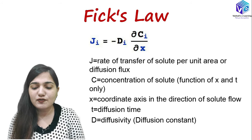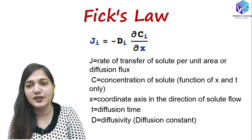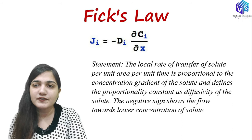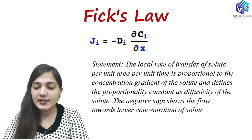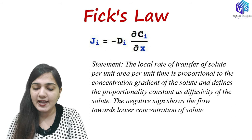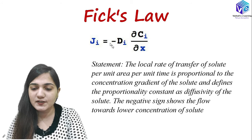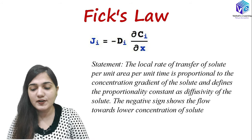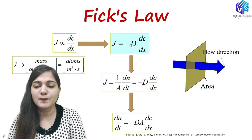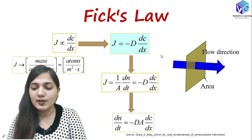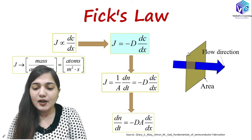D is the diffusion coefficient, diffusion constant, or diffusivity — it is a constant. According to the statement of Fick's first law: the local rate of transfer of solute per unit area per unit time is proportional to the concentration gradient of the solute, and it defines the proportionality constant as diffusivity. The negative sign shows the flow toward the lower concentration of the solute. So J equals minus D times dC by dx.